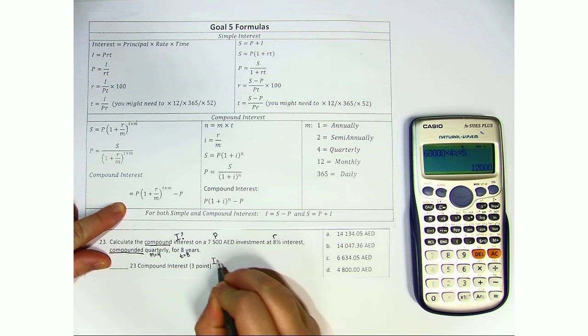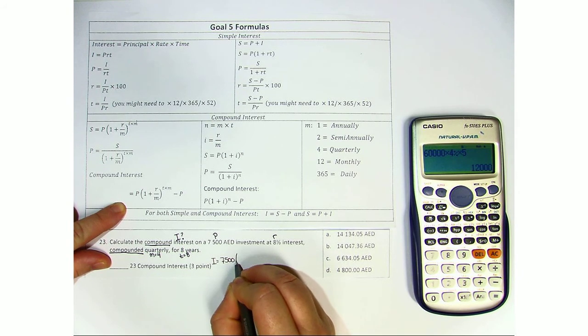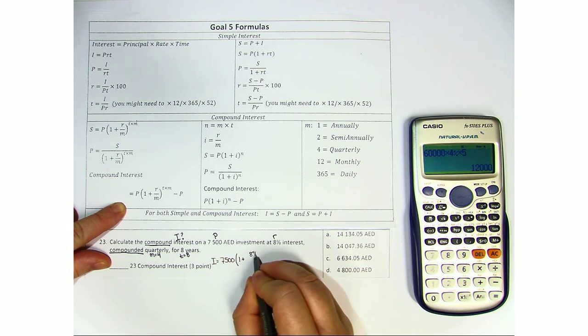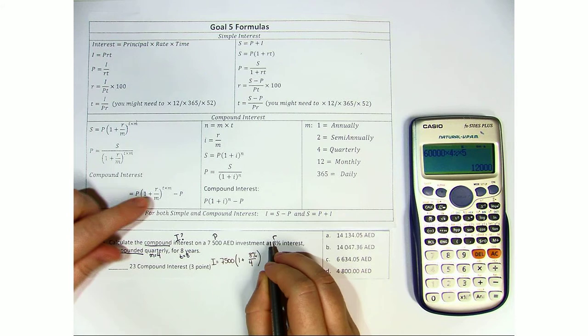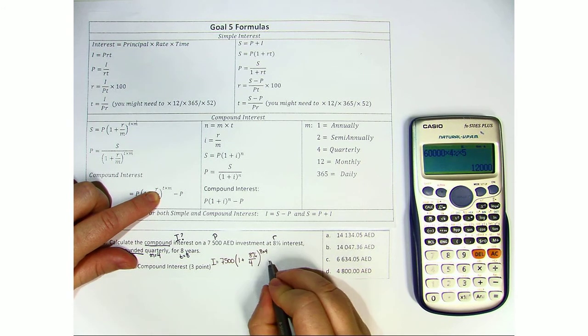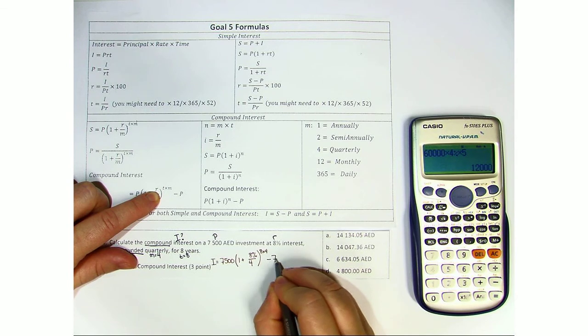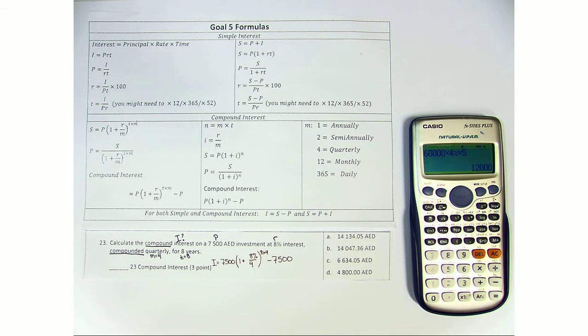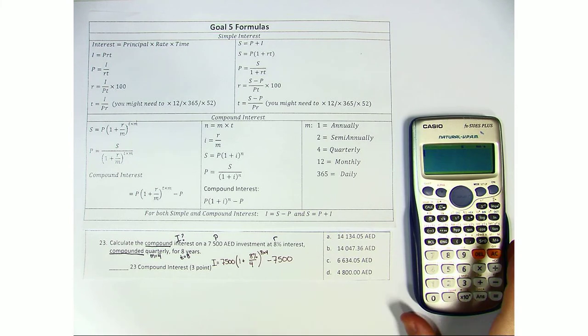the interest is 7,500, open bracket, 1 plus 8% divided by 4, raised to the 8 times 4, minus my original investment of 7,500. So let's go ahead and put this in the calculator.